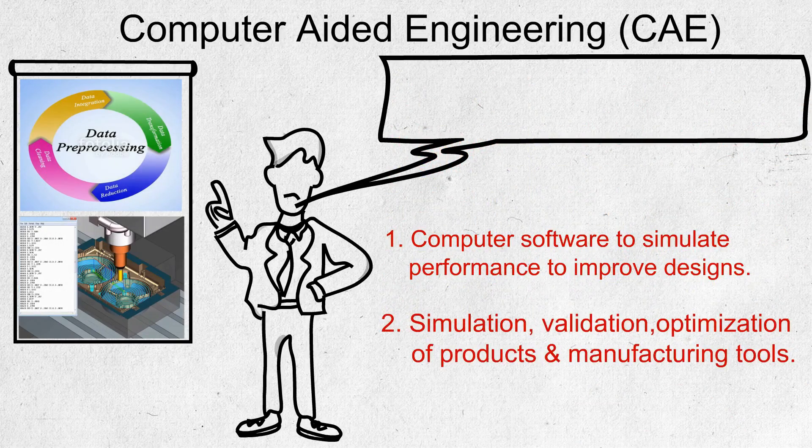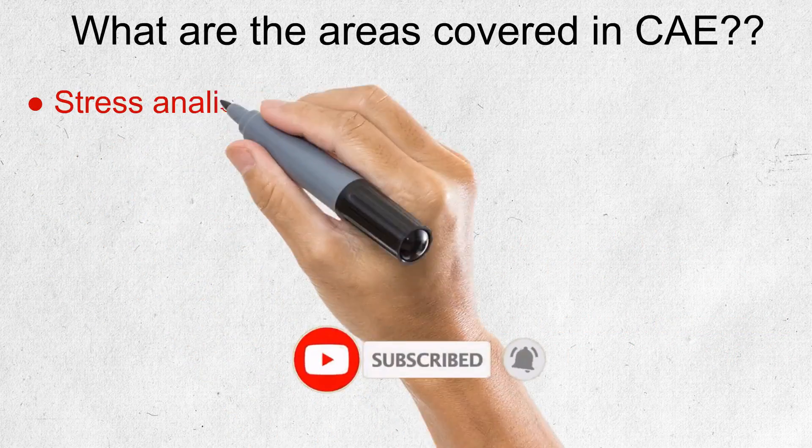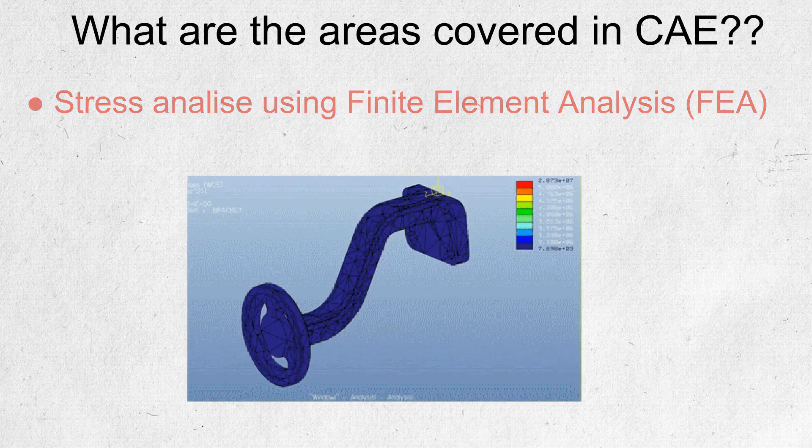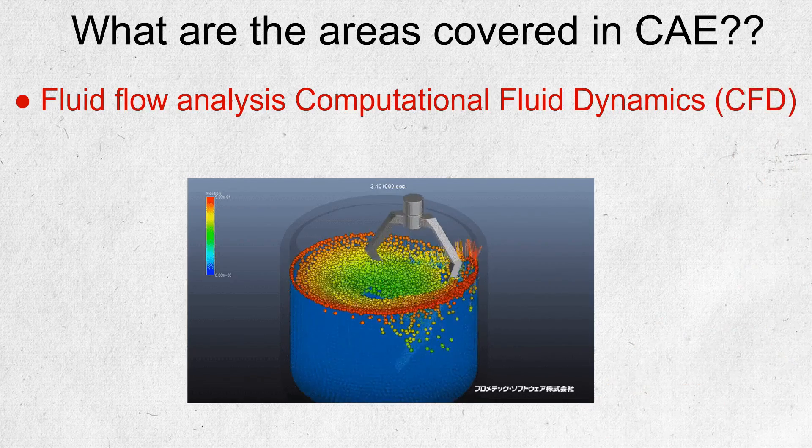What are the areas covered in CAE? Stress analysis on components and assemblies using Finite Element Analysis (FEA), thermal with fluid flow analysis, and Computational Fluid Dynamics (CFD).